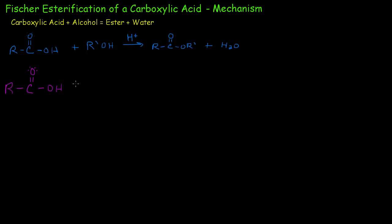What happens here is that we have our acid floating around. This oxygen is very dense in electron density — there's a partial negative charge here — so these electrons are going to be attracted to the positively charged free-floating hydrogen, our positively charged proton.